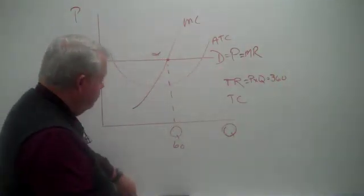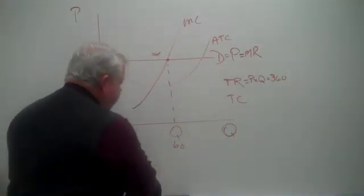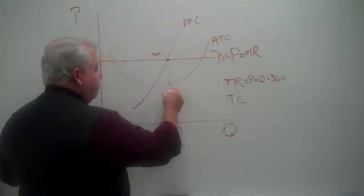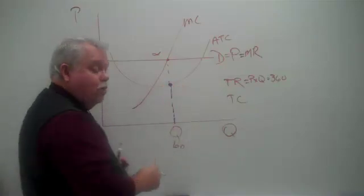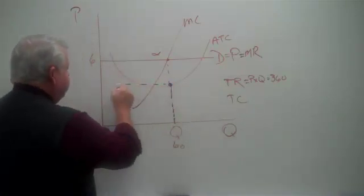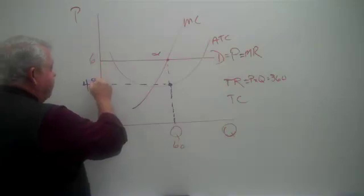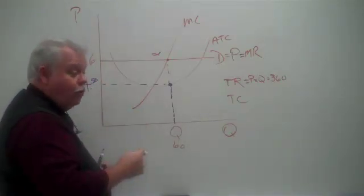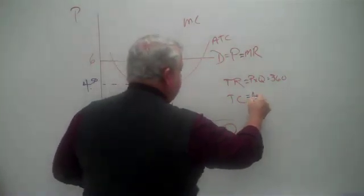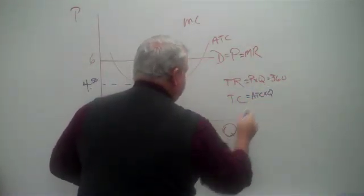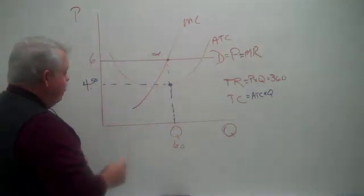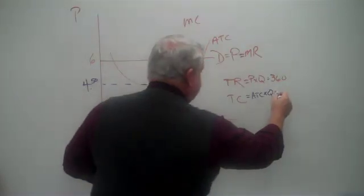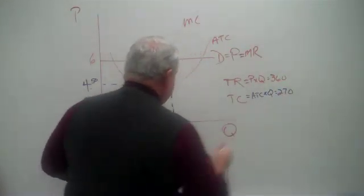What's their total cost? Well, to read total cost, if you remember back to your cost chapters, you take the level of output, read up to the average total cost curve, and read over. Let's say that this is $4.50. Okay? So the cost per unit is $4.50, and they're producing 60 units. 60 times $4.50, how much is that? That's getting complicated, isn't it? I think that's $270.